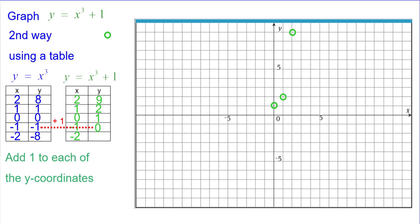Negative 1 plus 1 is 0, so plot the point negative 1, 0. And negative 8 plus 1 is negative 7, negative 2, negative 7. And those are my five key points.